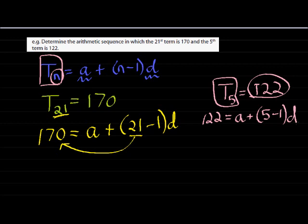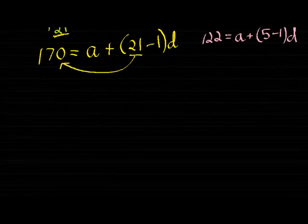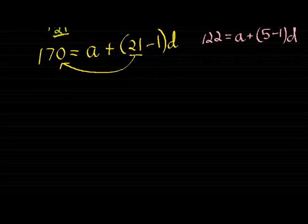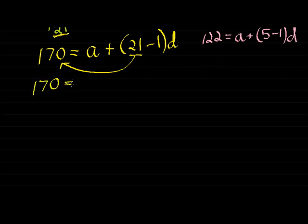And now what you'll notice is that you have two equations that you need to solve simultaneously. Let's start to do that. 170 on this side: 170 is equal to a plus 20d. And this one, I'm just going to write it underneath, because you can always use simultaneous equations dealt with elimination.